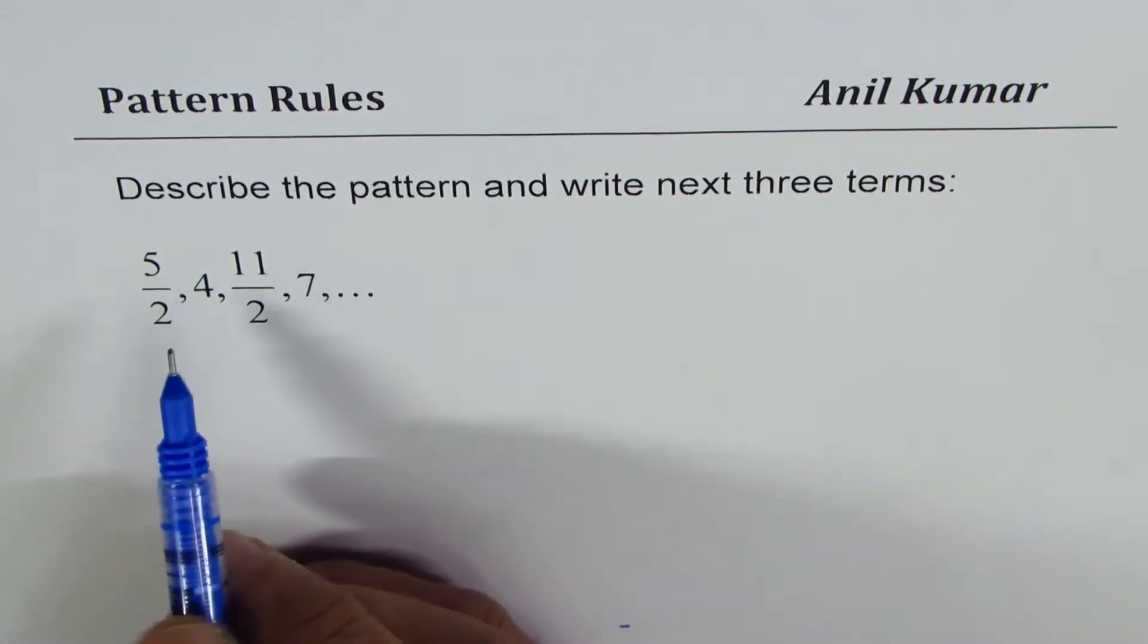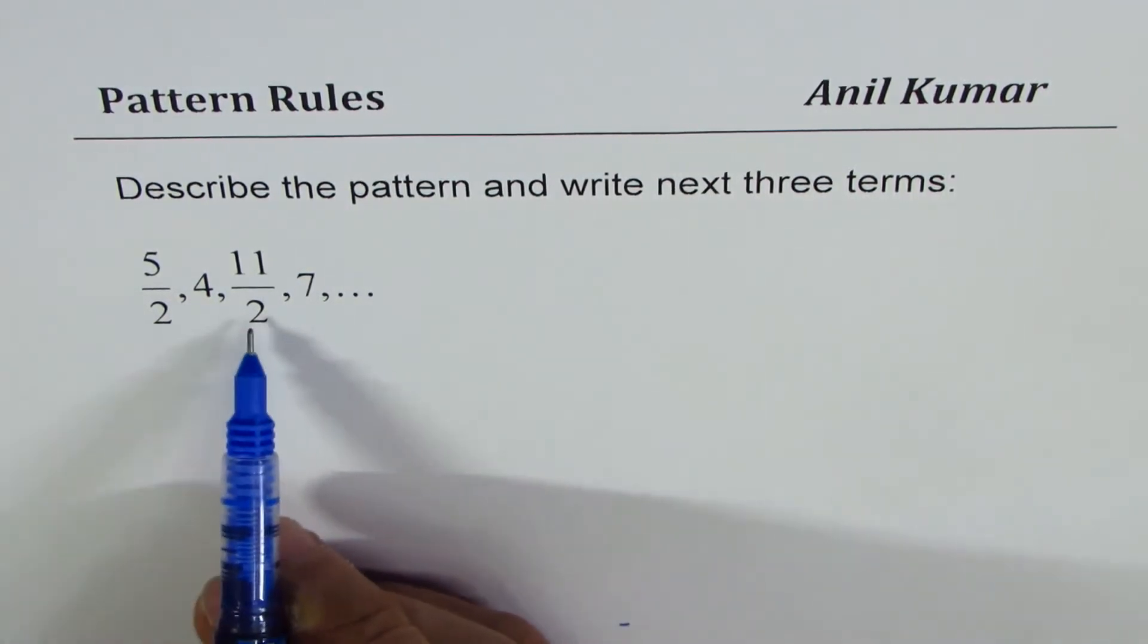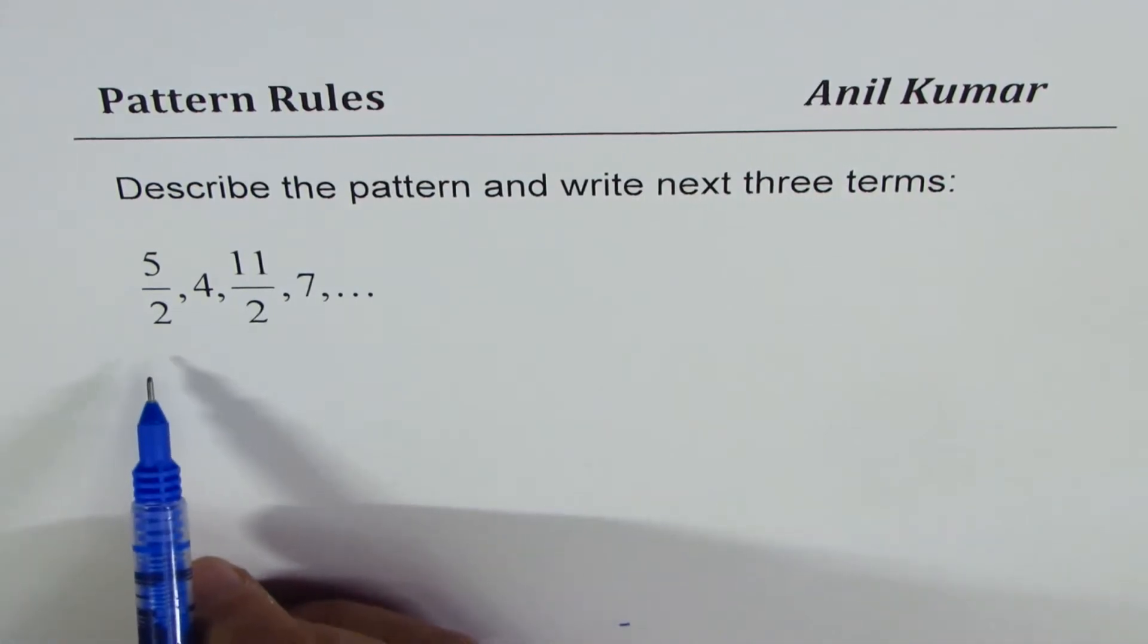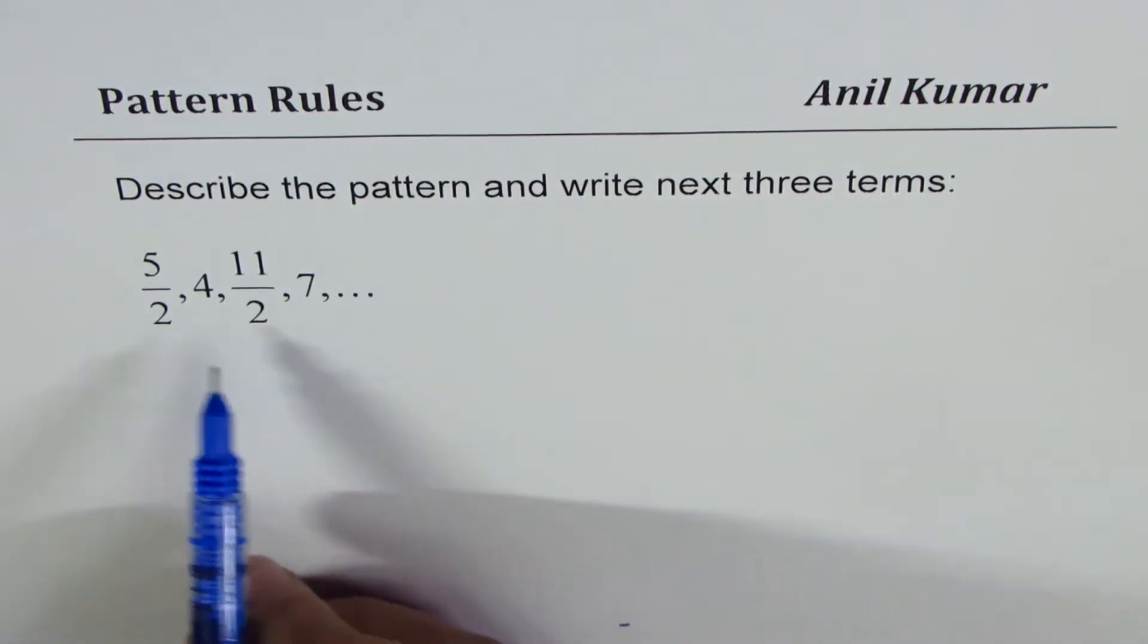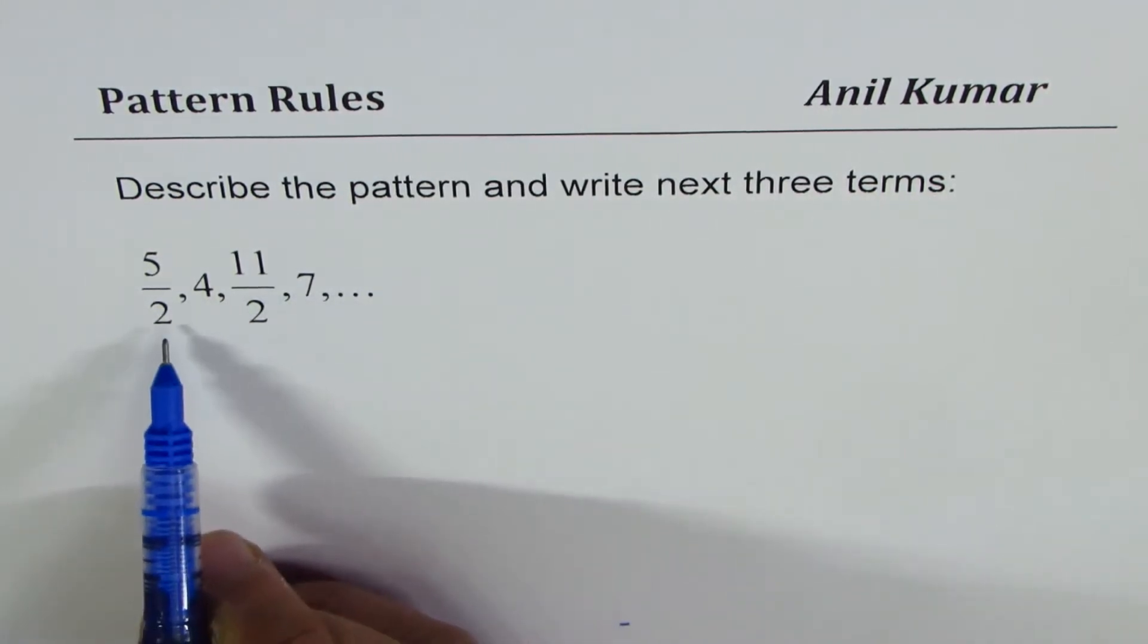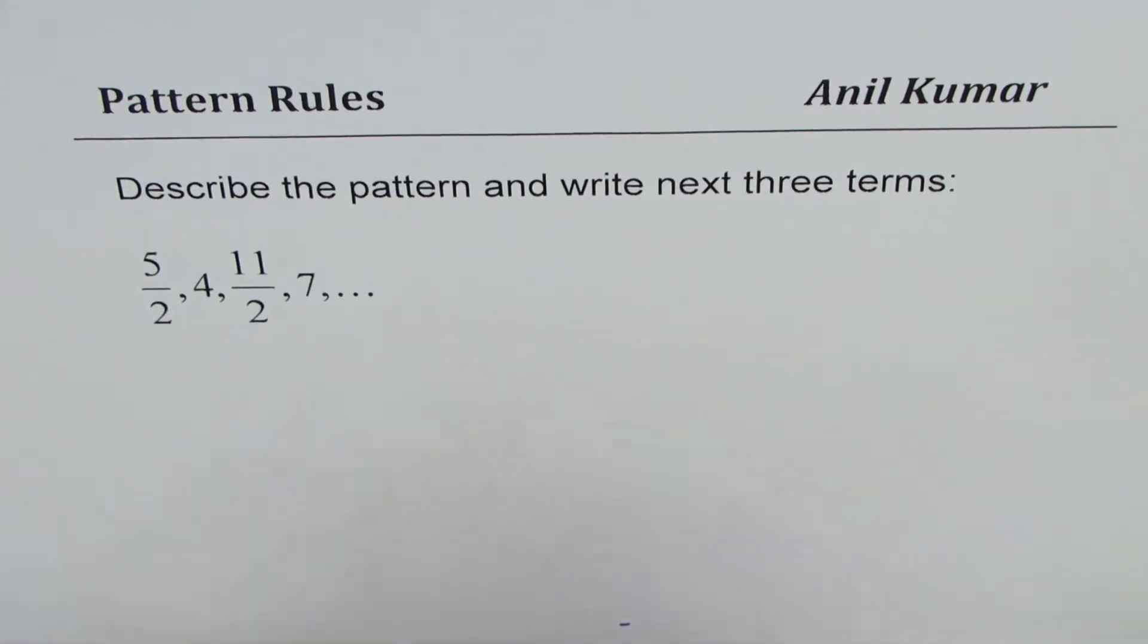Now here you will see that some of the numbers, rather two of them, are with denominator of 2. To really understand this pattern, let us write all the numbers with denominator of 2.